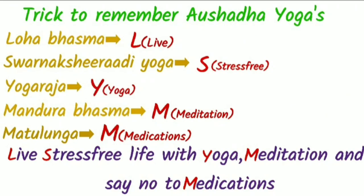Moving on to tricks to remember Aushadha Yogas — Loha Bhasma, Swarnakshiri Radi Yoga, Yoga Raja, Mandura Bhasma, Mathulunga. Remember the sentence: 'Live stress-free life with yoga, meditation and say no to medications.' In the word 'live,' L denotes Loha Bhasma. In 'stress-free,' S denotes Swarnakshiri Radi Yoga. In 'yoga,' Y denotes Yoga Raja. In 'meditation,' M denotes Mandura Bhasma. In 'medications,' M denotes Mathulunga.